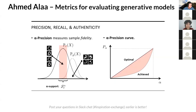If we have a Gaussian distribution, the alpha support will be a subset concentrated around the mean. By varying alpha from 0 to 1, we get an entire curve of precision rather than a single number. For an optimal model that perfectly creates samples exactly resembling the real data distribution, we get a perfect straight line for this alpha precision curve. But if we have an imperfect model that creates noise or samples with mode shift or mode collapse, we get a deviation from this straight line. Measuring the area between the optimal and the achieved alpha precision curve gives a single number quantifying the fidelity of the model.